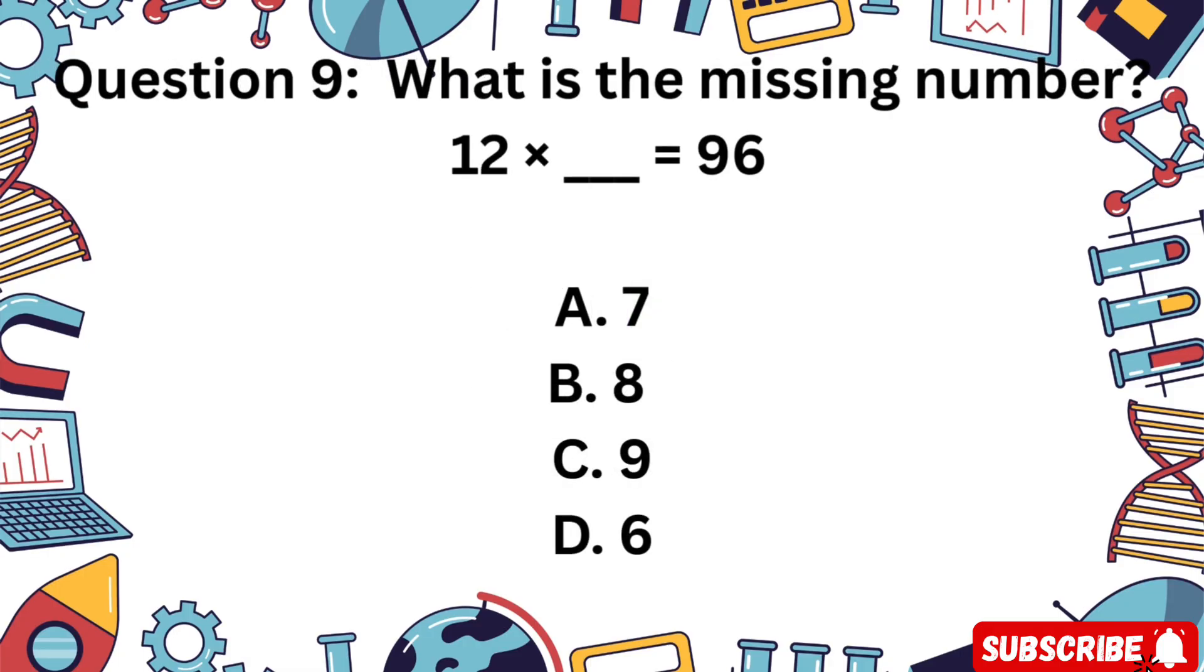Question 9: What is the missing number? 12 times blank equals 96. Is it A 7, B 8, C 9, or D 6?